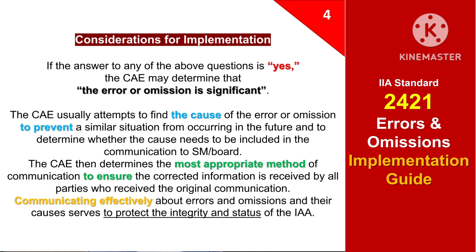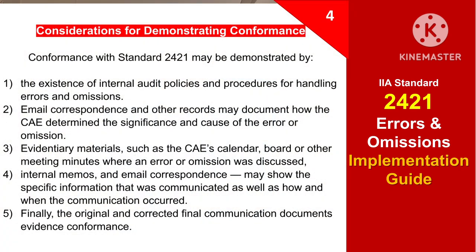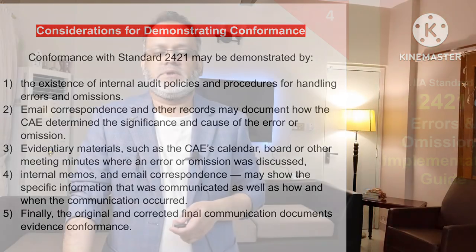The Chief Audit Executive then determines the most appropriate method of communication to ensure the corrected information is received by all parties who received the original communication. Communicating effectively about errors and omissions and their causes serves to protect the integrity and status of the internal audit activity. To demonstrate conformance with standard 2421 errors and omissions, we need internal audit policies and procedures for handling errors and omissions, email correspondence and other records documenting how the Chief Audit Executive determined the significance and cause of the error or omission, evidentiary materials such as the Chief Audit Executive's calendar, board or other meeting minutes, internal memos, and email correspondence. Finally, the original and corrected final communication documents evidence conformance.